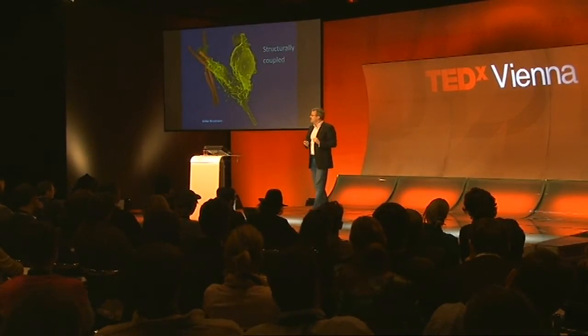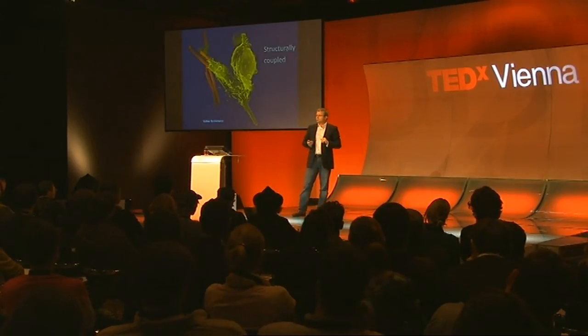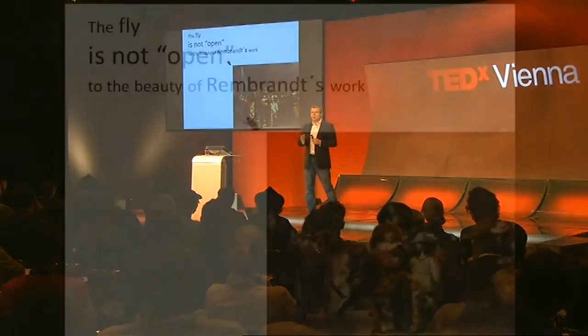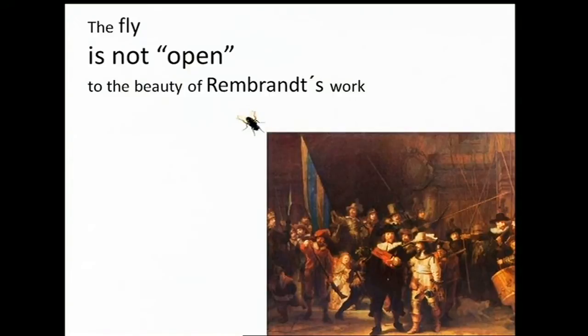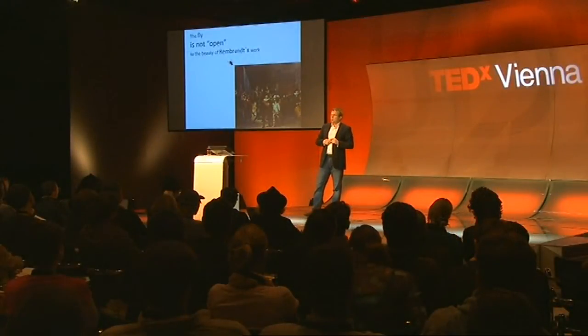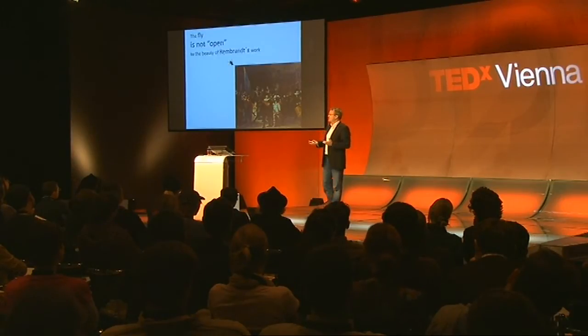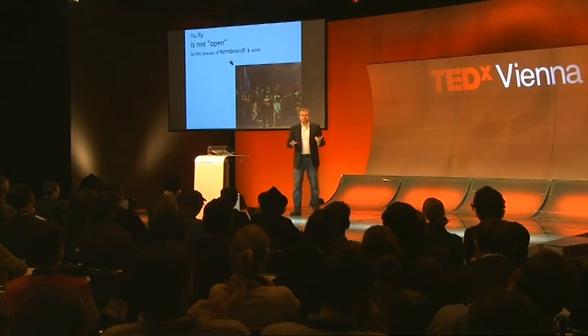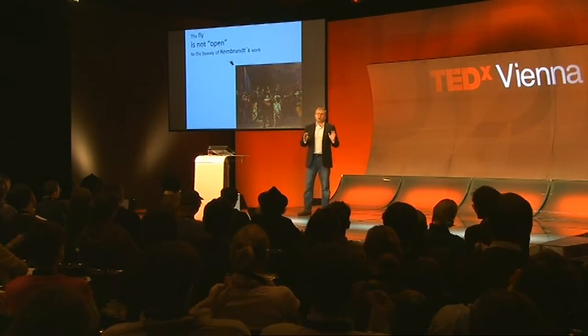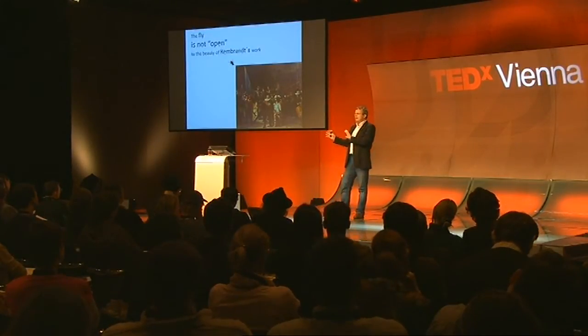To give you an example: this fly, which is probably walking over a painting of Rembrandt, is open to the painting — it can touch it, it can even take away some molecules from it. But it's not open in the sense that it's structurally coupled to the cultural sphere of human aesthetics. It's not possible for the fly to understand Rembrandt's work because it's not structurally coupled. That reminds me of how the intranet compares to the internet — it's not structurally coupled, because we have a different picture of how users should interact in an intranet than they do on the internet.